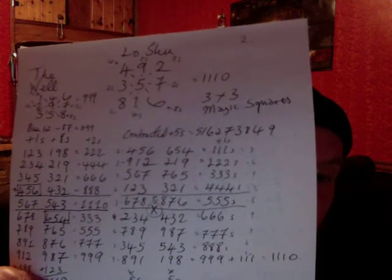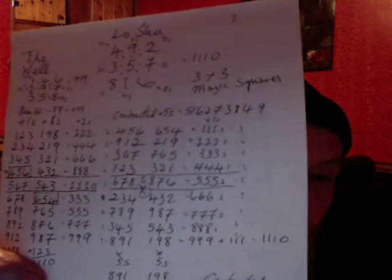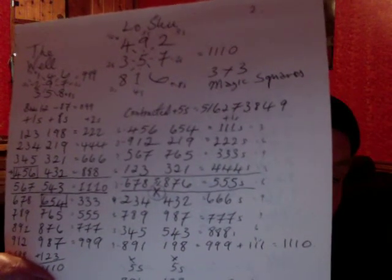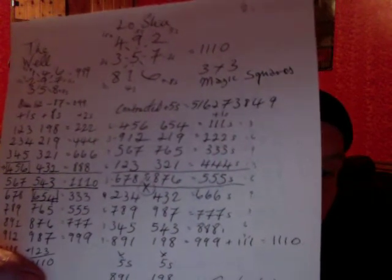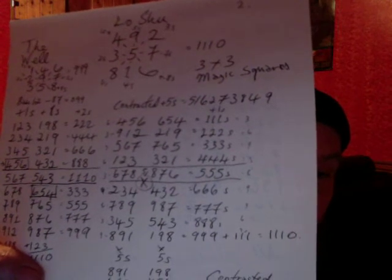Now here we have the Lo Shu, and if we take it as an 8-spoke, we will see that all of the numbers occur in different solfege tones. We can start with 1 to 8: so 1, 2, 3, 1 plus 8, 9 plus 8 — so you get all those values.